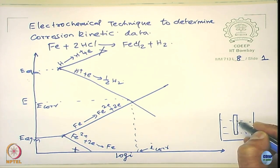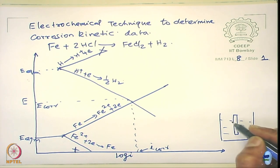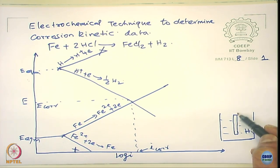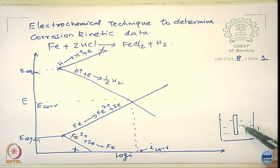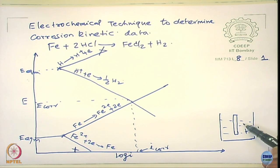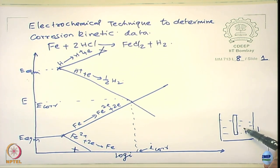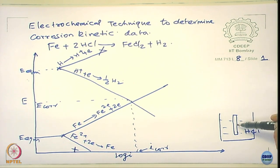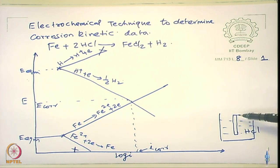I can measure the corrosion potential easily using a reference electrode and an electrometer. I want to also determine the I_corr value. Can I measure it directly? I cannot measure it directly because no current is coming out of this metal — the rate of iron oxidation is equal to the rate of reduction of H⁺ ions. The electrons liberated on the surface are consumed by the H⁺ ions; no electrons go out of the system. So I can measure E_corr but not I_corr directly.